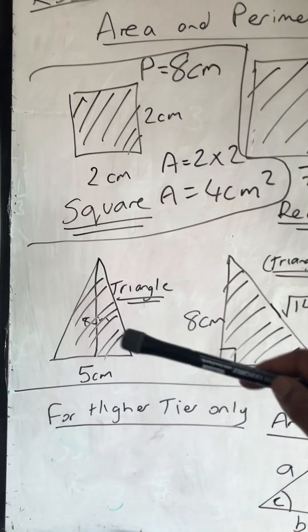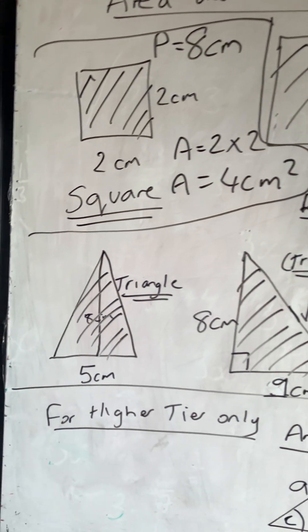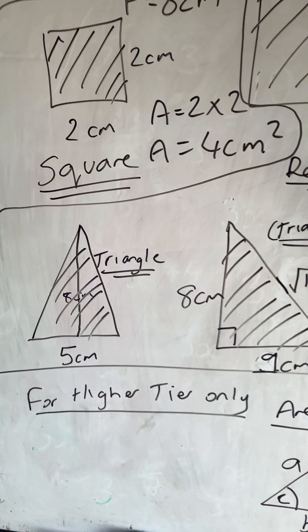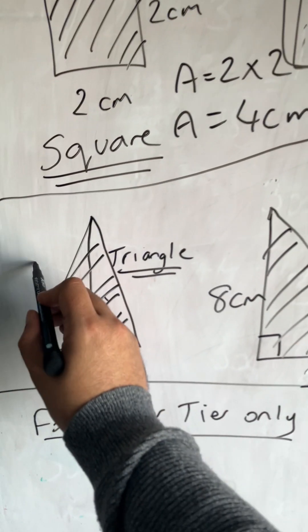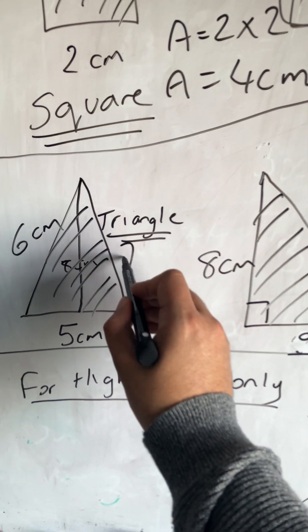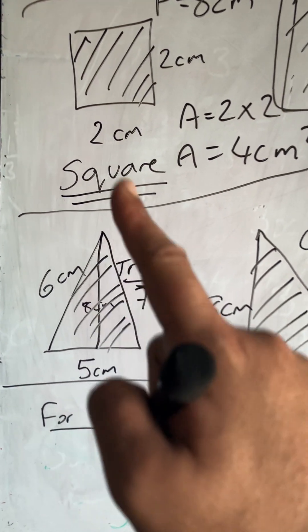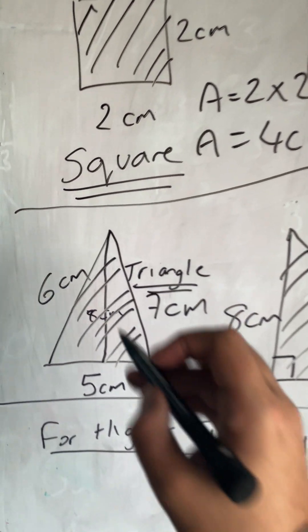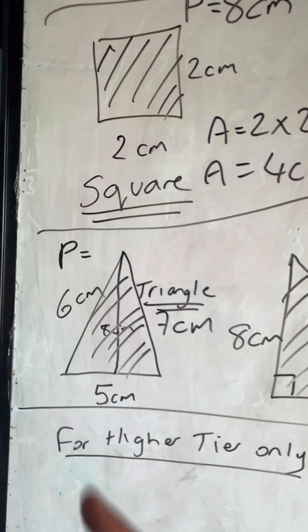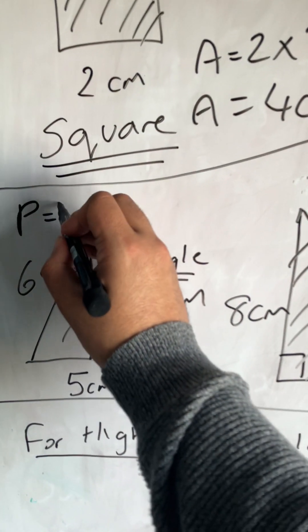For a triangle with sides of 5, 6, and 7 centimetres, the perimeter would be 5+6+7: five plus six is eleven, plus seven is 18.